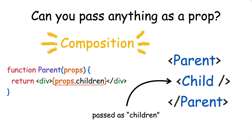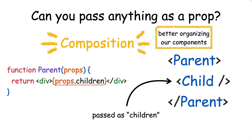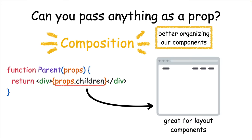This is great for something called composition, which is about organizing our React components in the most optimal way. The children prop is really useful for creating layout components when you want your children to have the same common layout.